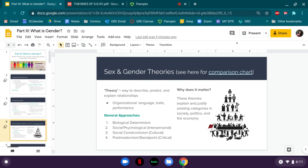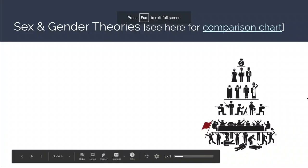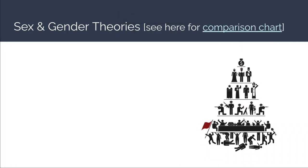That leads us into what we're going to focus on today: giving you a history of the different theories used to explain sex and gender. What these really are are four main categories of theories. What we mean by a sex or gender theory is the same way we use theory in science — it's a way to describe, predict, and explain relationships. We don't just want a theory that describes reality as it currently is, because as we discussed, some of these things change. A good theory should be able to predict what those concepts will mean in the future.